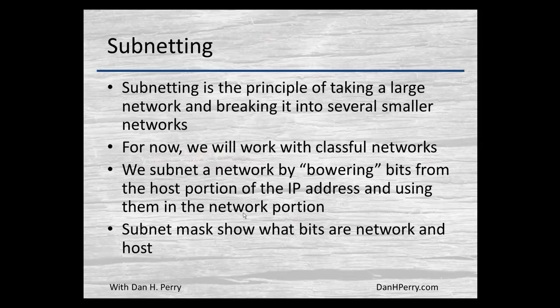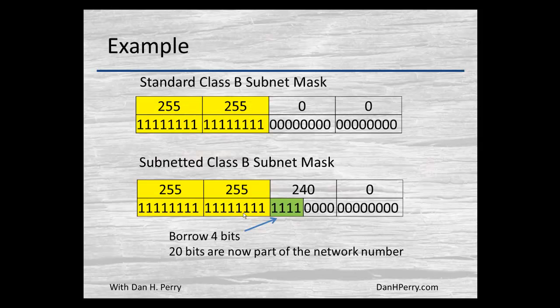Subnet masks show us how the network is broken down — what bits are used for the host and what bits for the network. If we take a standard Class C network where the first 16 bits are network and the last 16 bits are the host, and we want to break it into smaller networks, we do that by borrowing bits.